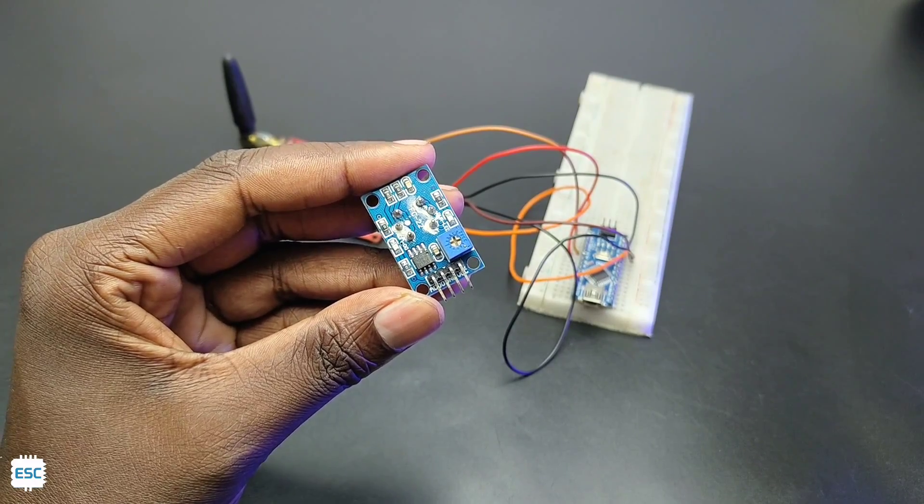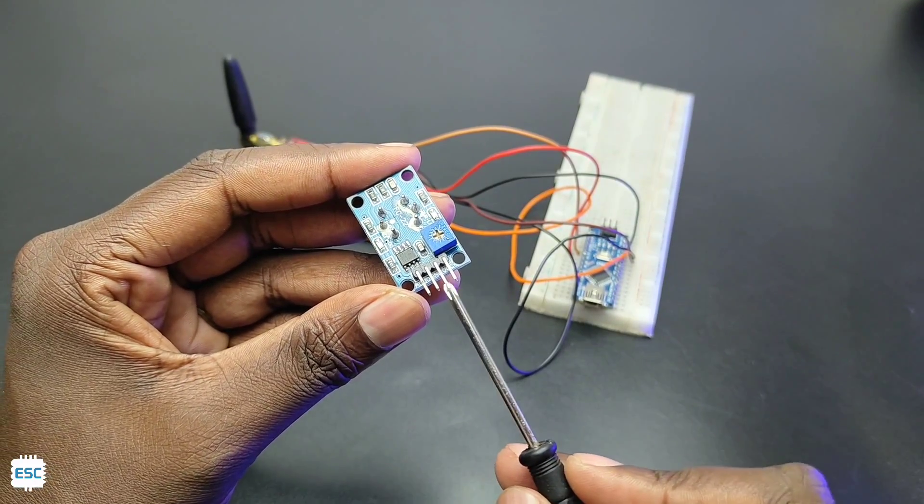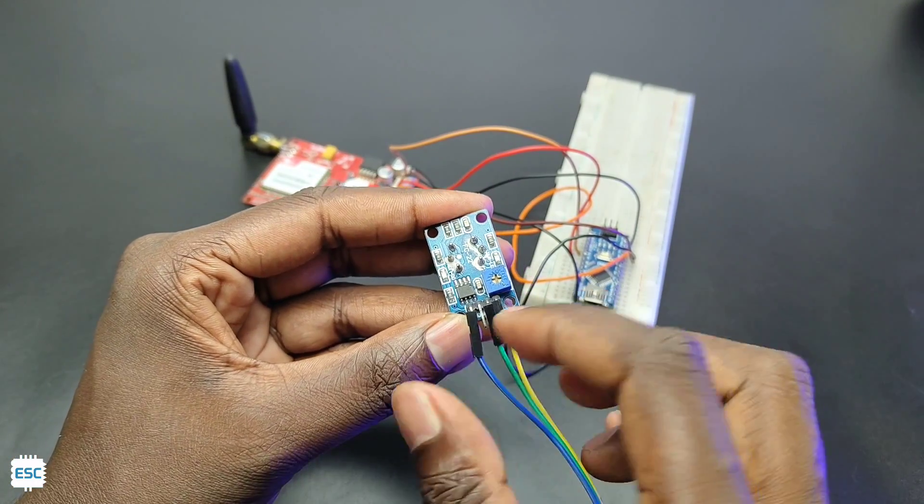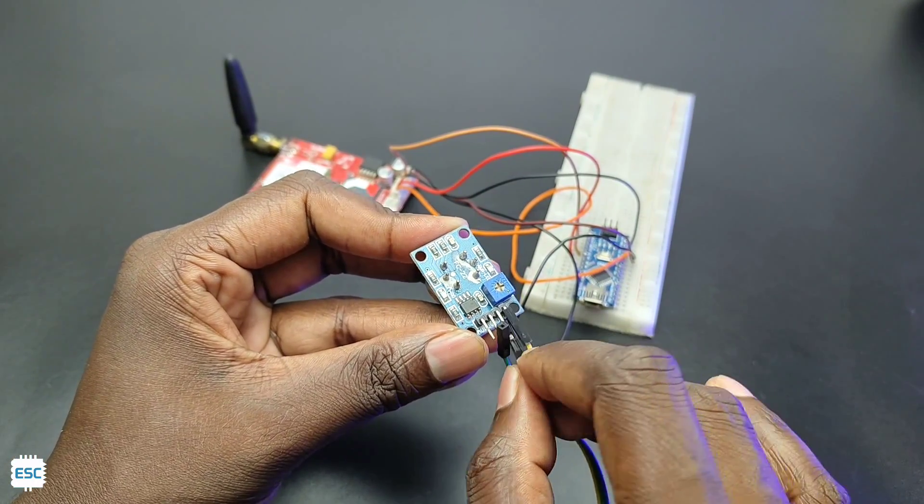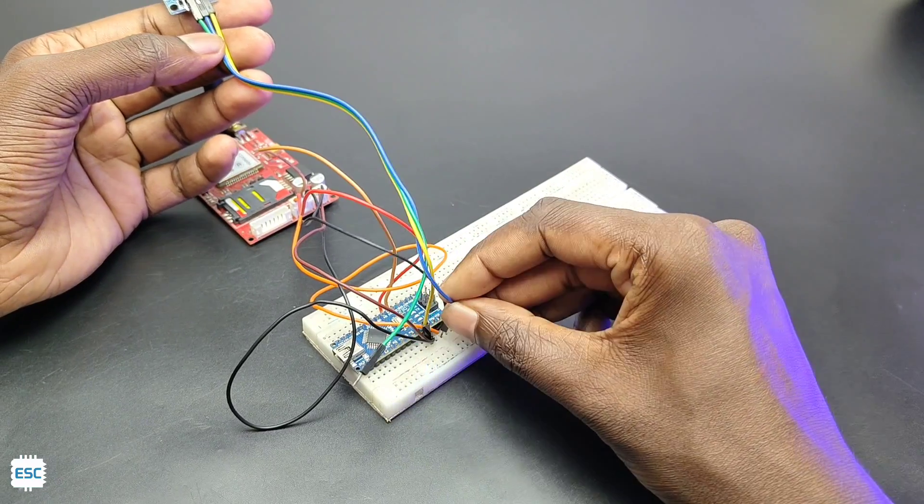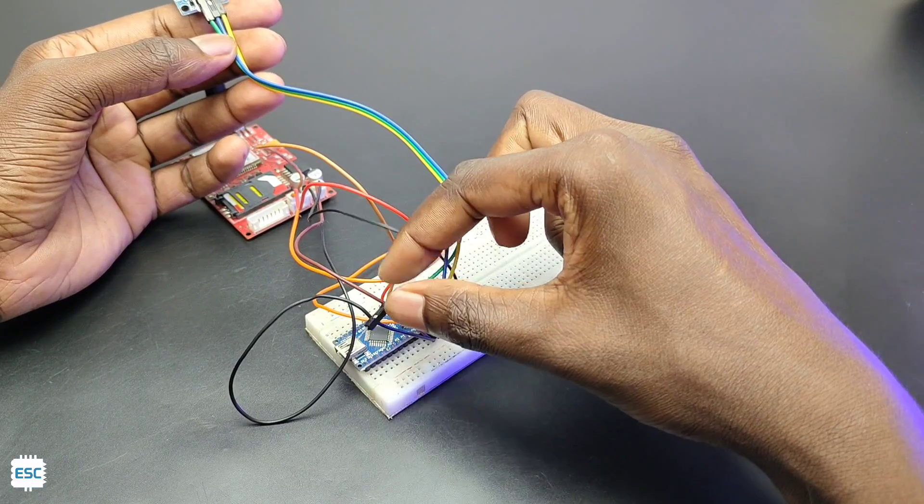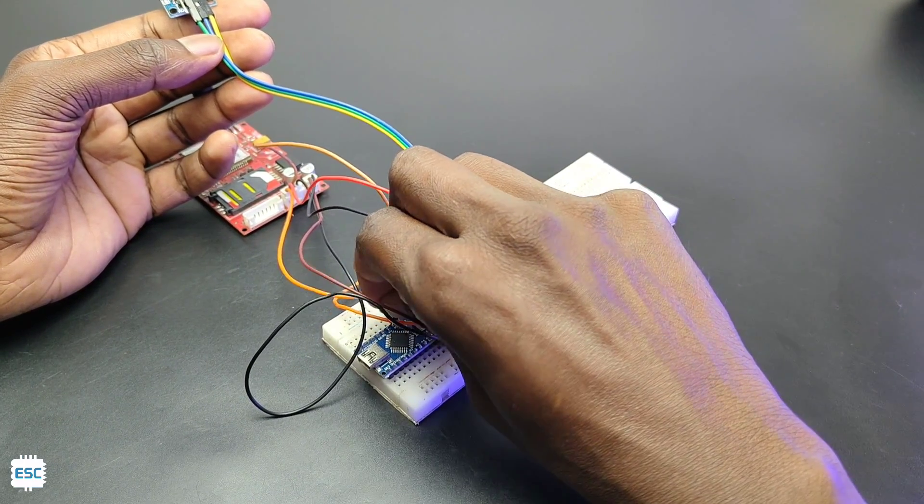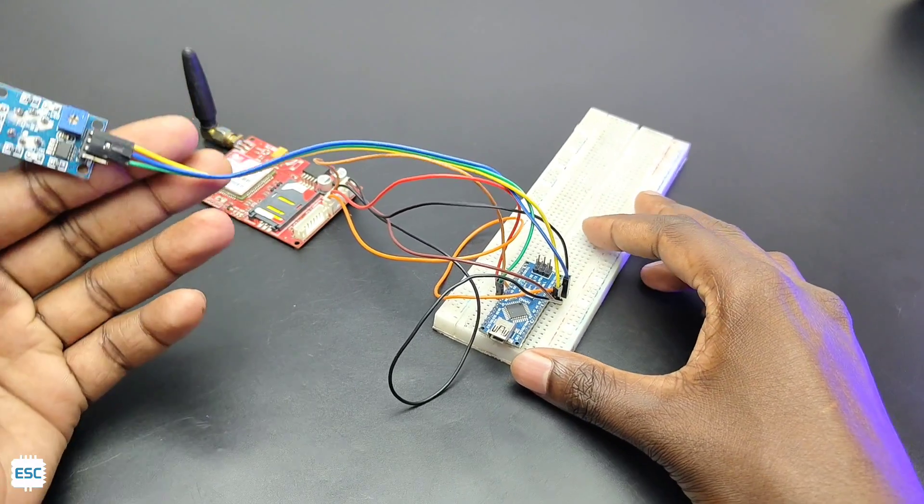Now let's connect the gas sensor. The sensor has four pins: VCC, ground, analog out, and digital out. So connect VCC to 5V of Arduino, ground to ground of Arduino, finally digital out to pin 5 of Arduino. So that's all about the connection.